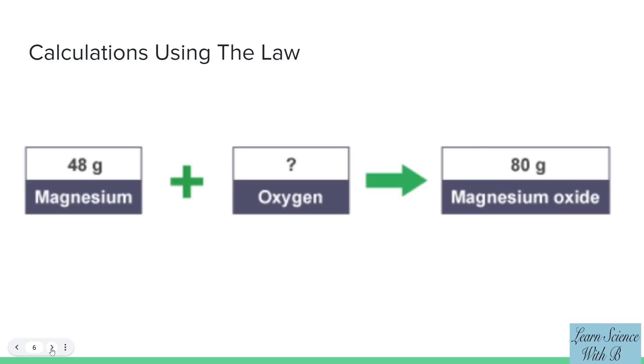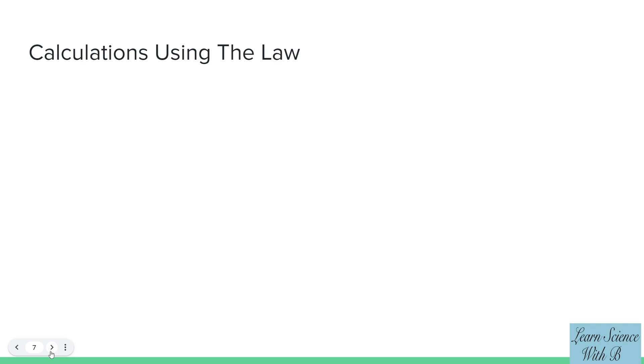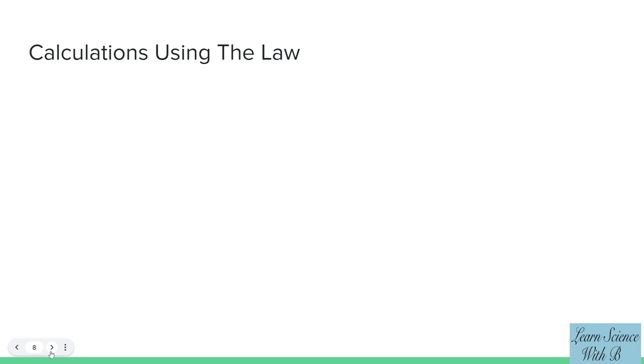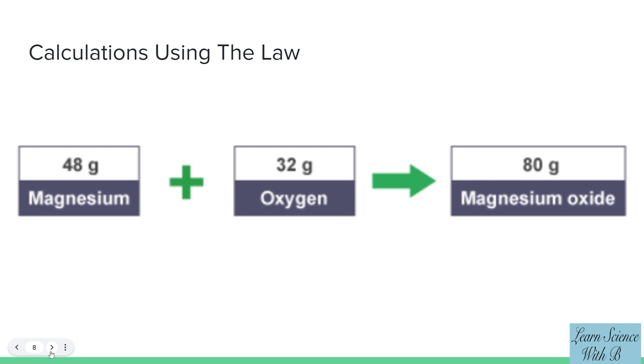Example 2: 48 grams of magnesium and an unknown amount of oxygen make 80 grams of magnesium oxide. Take the 80 grams of magnesium oxide and take away the 48 grams of magnesium. This leaves 32 grams of oxygen.